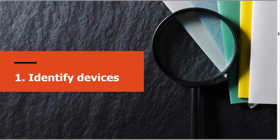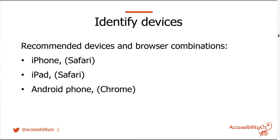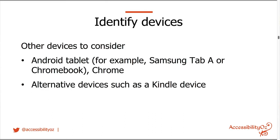When it comes to identifying devices, we concluded you really only need to test on an iPhone, an iPad, and an Android phone. On iOS devices, test on Safari; on Android, test on Chrome. If you're Western world facing, the majority of mobile devices used are iOS. If it's more Eastern world facing, it's Android phones. In general, people with disabilities prefer iOS devices because they're more accessible, but some go for Android phones because they're cheaper.